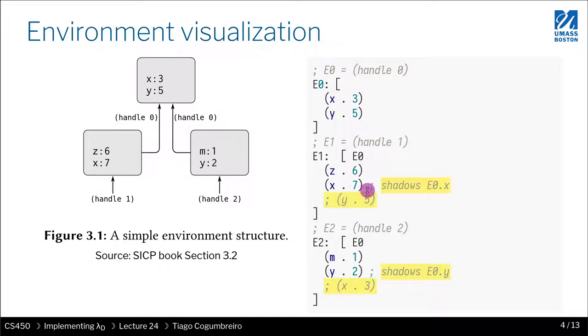So what is on the left-hand side? The whole thing is the heap. In this heap we have three handles: handle 0 here at the root, handle 1, and handle 2, and the three environments that are accessible via three possibly different portions of your code.